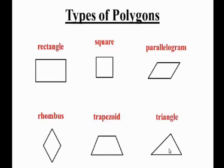A triangle has three sides, which is different from the other polygons that we just saw. They all have four sides.